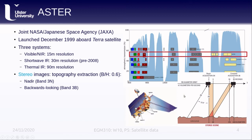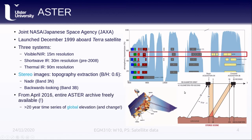ASTER has a nadir camera looking straight down in band three (near-infrared), as well as a backwards-looking band in the same wavelength range, acquiring the same spot on Earth about 60 seconds after the nadir camera. This means that for very fast motion — for example, river ice — you can calculate things like flow speed from these images. From April 2016, the entire ASTER archive is freely available, giving us an amazing 20-year time series of global elevation and elevation change for a number of different applications.